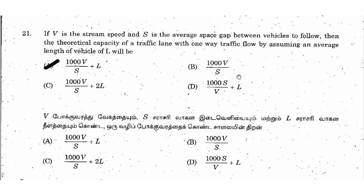The right answer is option B: 1000V divided by S. Here V is the stream speed in km per hour. The space per vehicle is equal to stopping sight distance plus average length of vehicle L. Therefore, the theoretical capacity of a traffic lane is equal to 1000V divided by S.